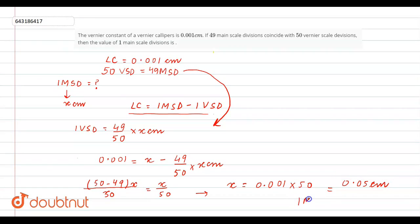So 1 main scale division is equal to 0.05 centimeters.